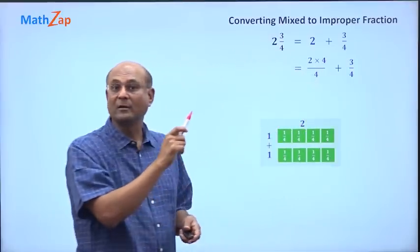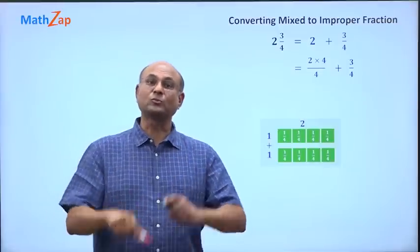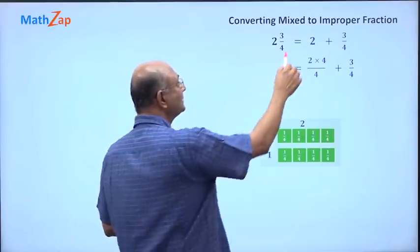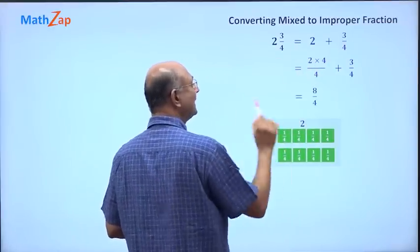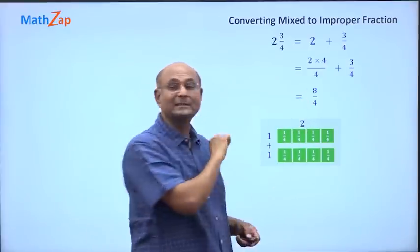So I have 2 times 4 by 4. You know, 1 is 4 by 4, 2 is 2 times 4 by 4, 3 is 3 times 4 by 4, and so on. So 2 is 2 times 4 by 4. 2 times 4 is 8, so that means there are 8 pieces of 1 by 4.